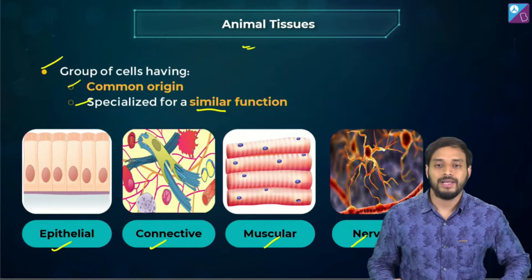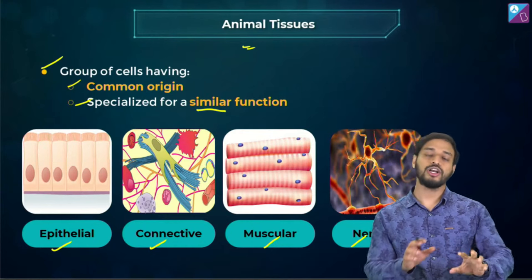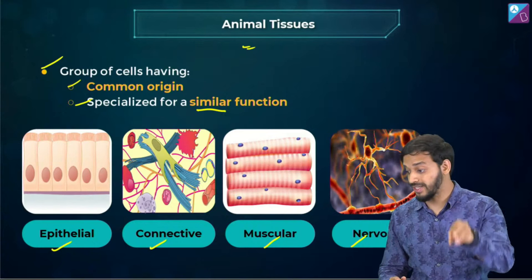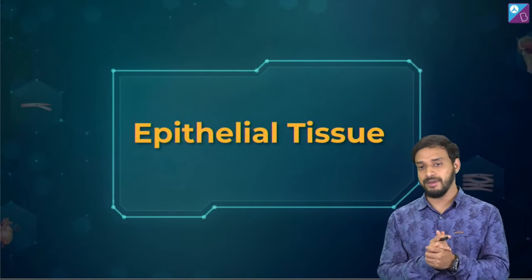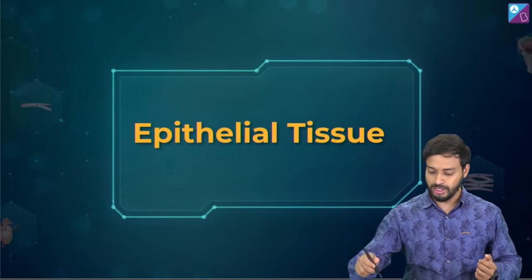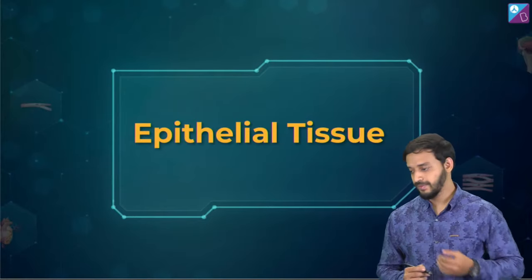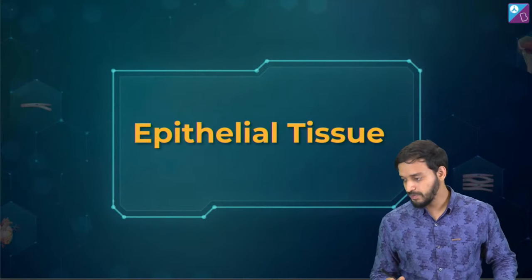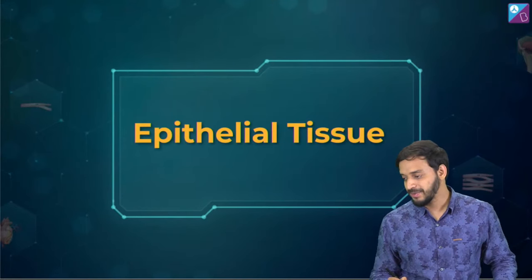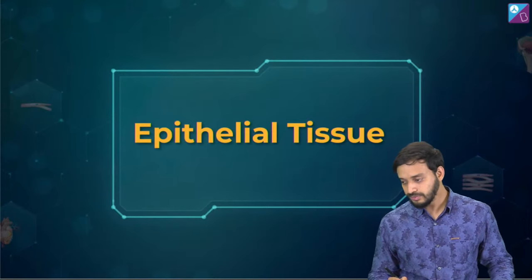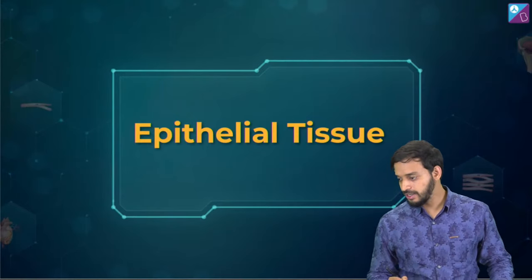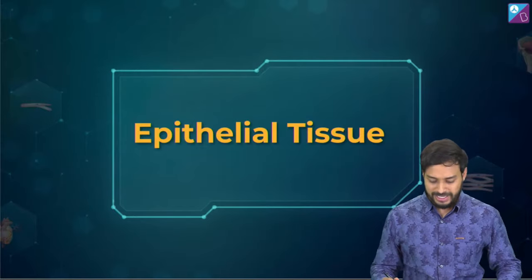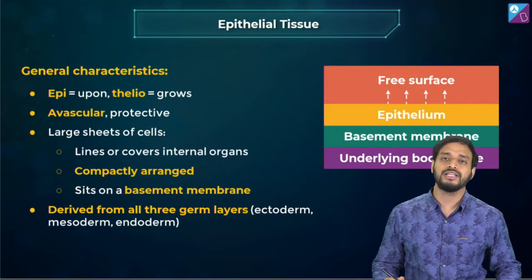The structure of cells may vary according to their functions — based on functions, the structure of cells can also vary. Epithelial tissues — where will you find them? Tell me on the chats. They are found in the outer covering and linings of the body, skin, boundaries. Let's start with epithelial tissues and their general characteristic features.